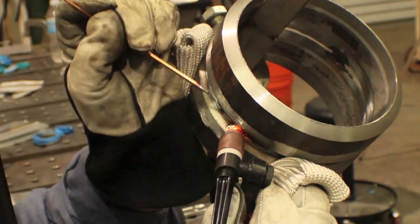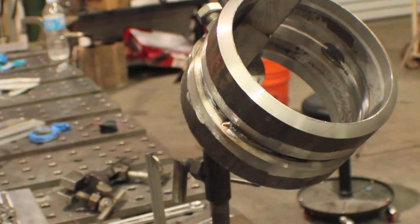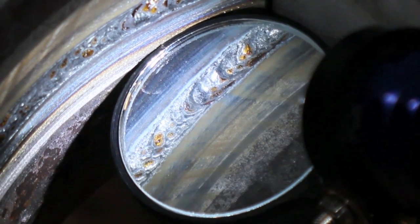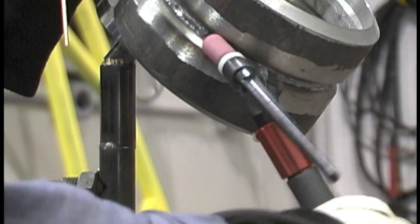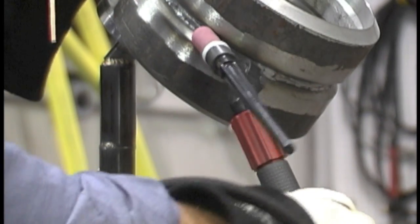It provides a nice root pass that's not flush, not poked through too much, just a little bit of protrusion, a little bit of reinforcement. And most codes, most inspectors will buy what that puts in there.